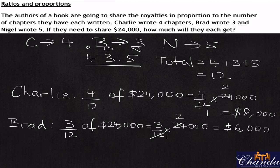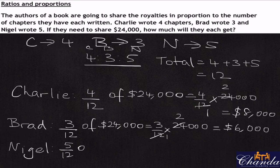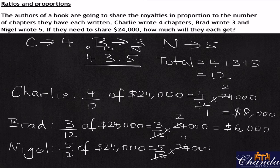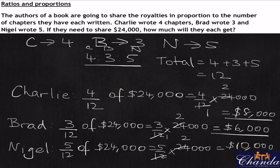That leaves us with Nigel. We can work it out in two different ways — either do the ratio as we did for Charlie and Brad, or because we know the total is $24,000 and we've already figured out $14,000, just do a takeaway. Let's be consistent: Nigel gets five over twelve times $24,000. Twelve and twenty-four gives two, five times two thousand is $10,000. So Charlie gets $8,000, Brad gets $6,000, and Nigel gets $10,000.